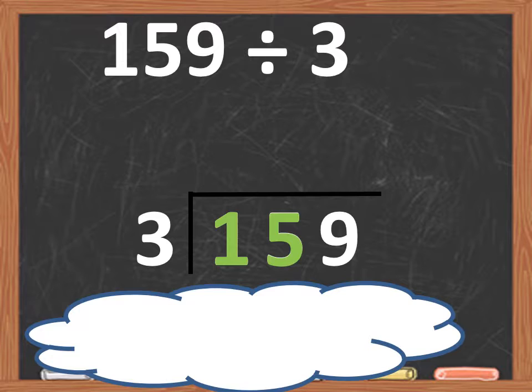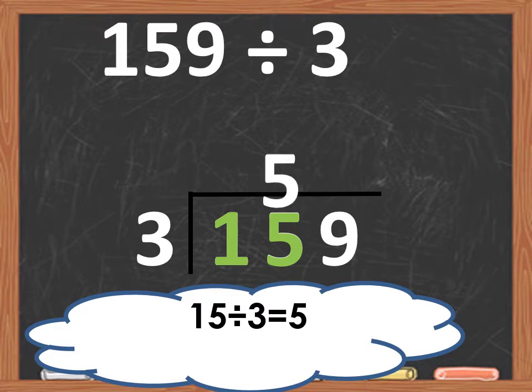3, 6, 9, 12, 15. That gives us 5 times. That means 15 divided by 3 equals 5.